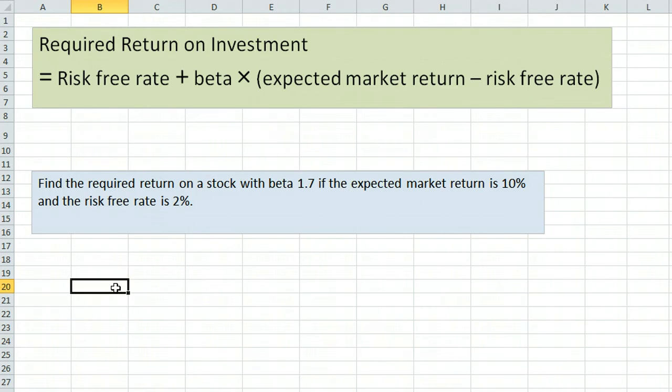Here we are going to do an example using the CAPM model to find the required return on an investment. Different textbooks have lots of different notation for these things, so I wanted to write out the formula without any notation.